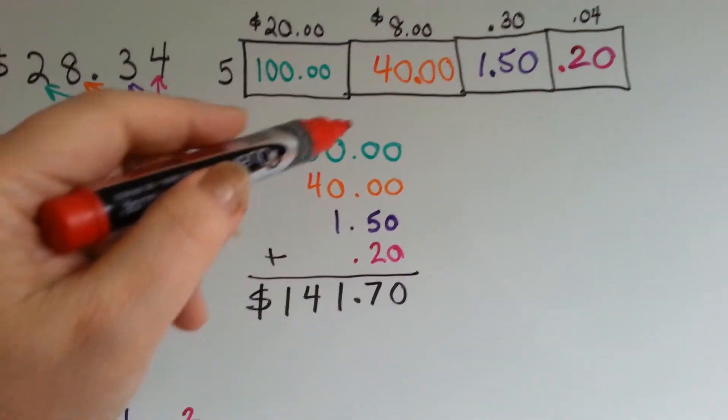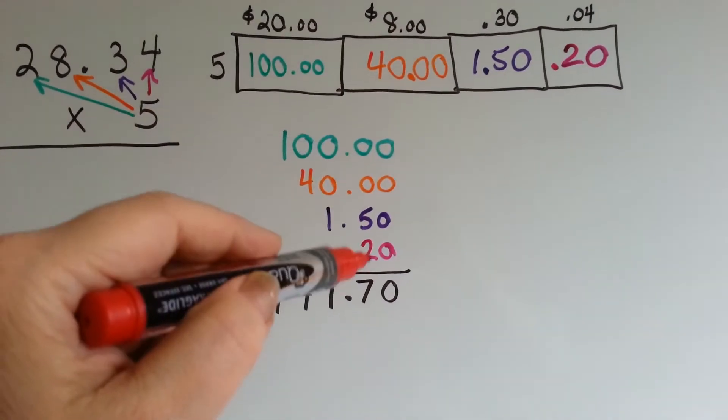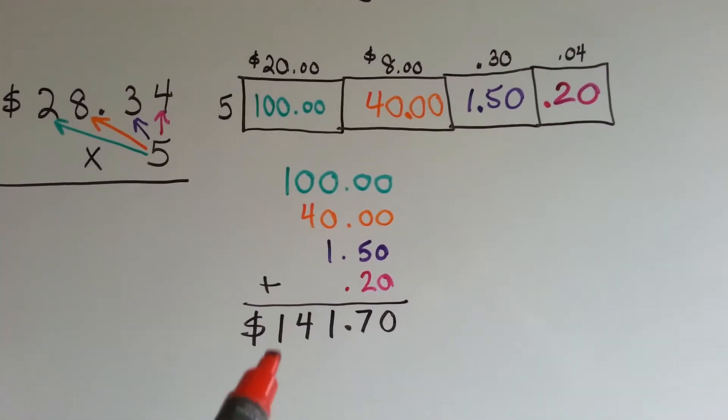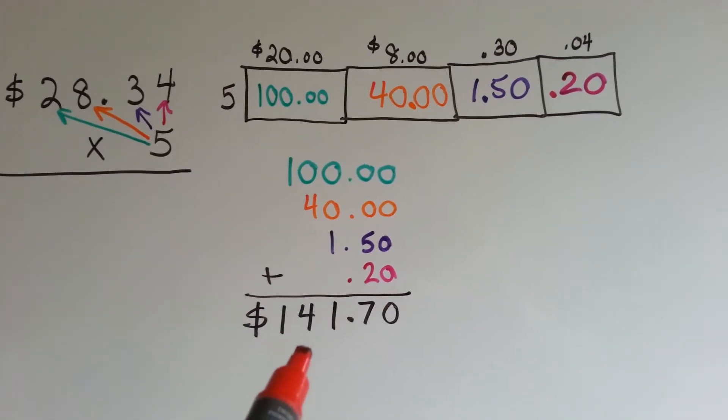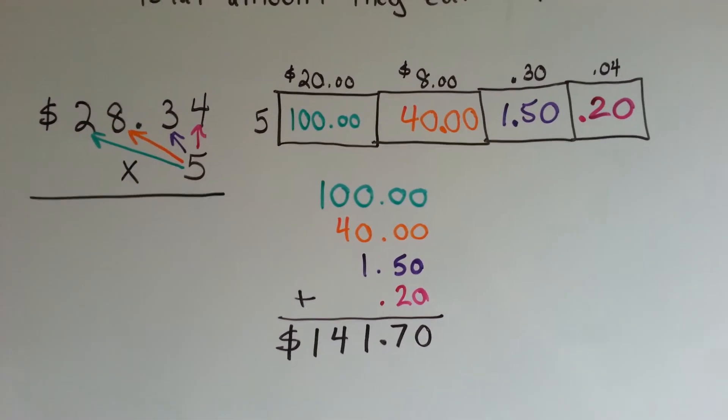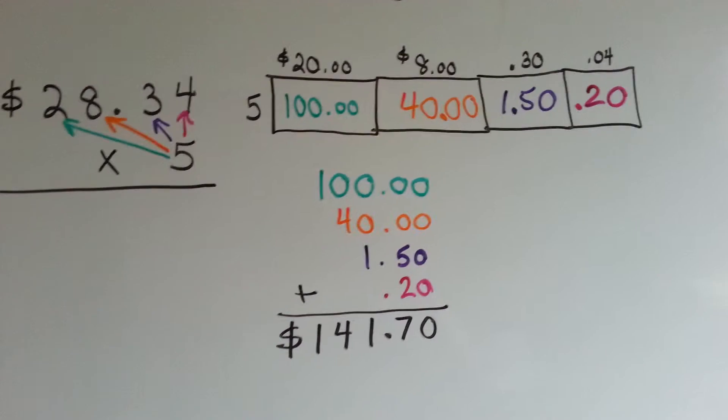When we add them all up, that's a 0, that's 7. We drop the 1, we drop the 4, and we drop the 1. The total they had made was $141.70 before they split it up to each get $28.34.